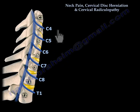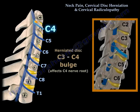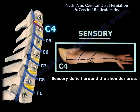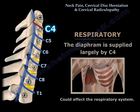If you have a C3-C4 disc bulge, that will affect the C4 nerve root. This will give you some sensory deficit around the shoulder area, as seen in the diagram. The diaphragm is supplied largely by C4, so it could also affect the respiratory system.